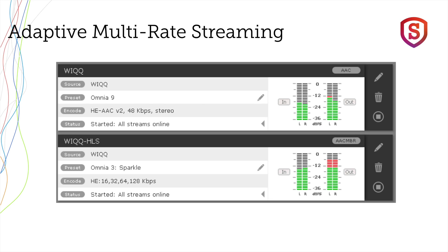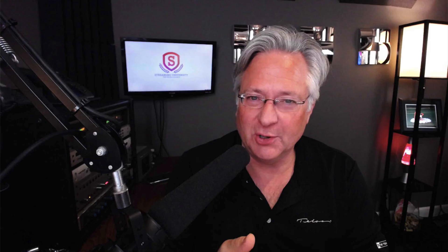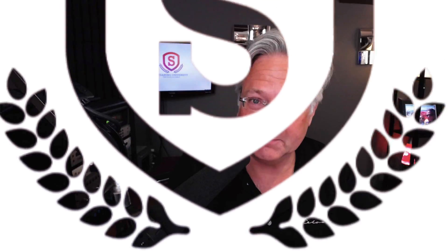The Zipstream X2 software and R2 hardware allows configuration of multiple stream encoders, so you can create traditional audio streams for Shoutcast or Icecast simultaneously with adaptive multi-rate streams. In our next episode, we'll actually set up an adaptive multi-rate stream encoder and a local server so we can listen to adaptive multi-rate streaming.